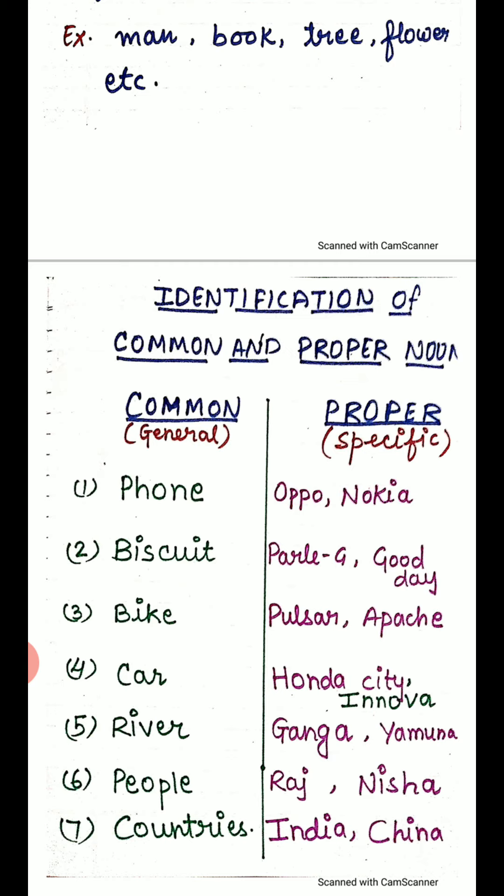But if you ask for the name, the specific name, the particular thing — if you go to the shop and say give me Parle-G biscuit — then you can get that same specific thing.